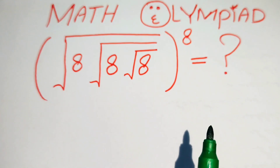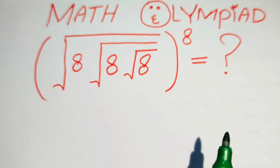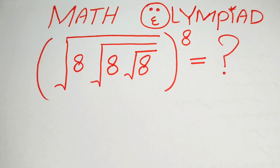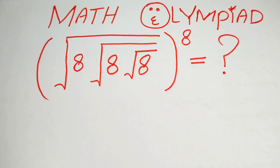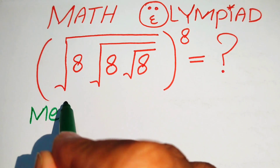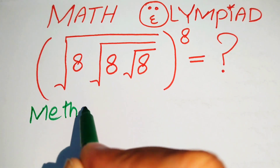Hello everyone, welcome. We are going to solve this math olympiad algebra problem. Here we have a nice algebraic expression and we will convert it into simplified form. In this question we solve the problem using two methods, so here we discuss our first method.